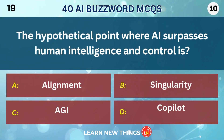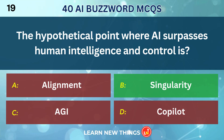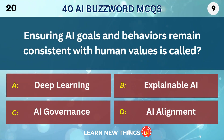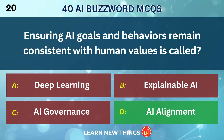The hypothetical point where AI surpasses human intelligence and control is the Singularity. Ensuring AI goals and behaviors remain consistent with human values is called AI Alignment.